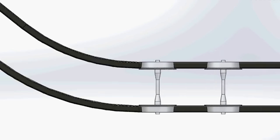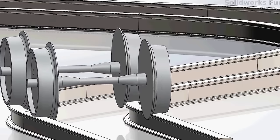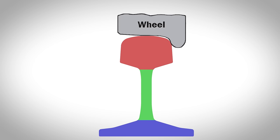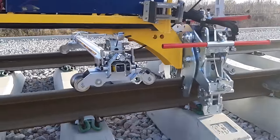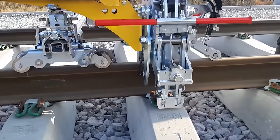The rails support and guide the train wheels. In principle, each rail is a rolled long steel beam. The widest part is the rail foot, which helps fix the rail on the slipper. Above it there is the rail web, and at the top there is the rail head. The rail head is the contact point between the wheel and the rail. The rail fastening system fixes the rails to the slippers, but it also helps to determine their position towards the longitudinal axis of the track.